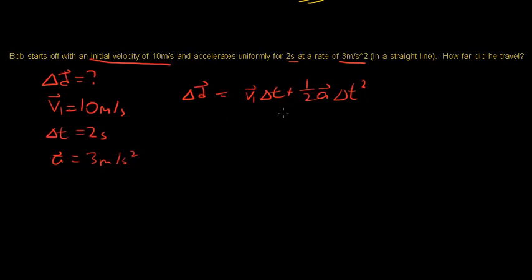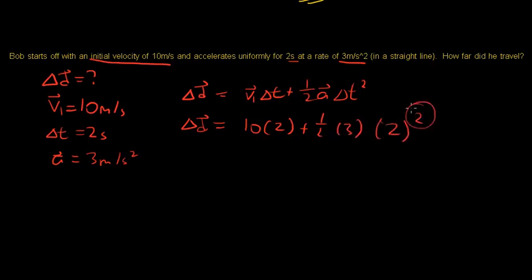After doing many problems, the equations become second nature. Let's plug in: v1 is 10 times time 2, plus half times acceleration 3 times time 2 squared. Remember the squared — it's critical. If you miss the squared, your equation is wrong.